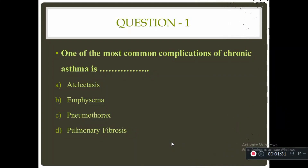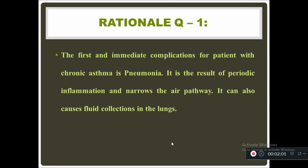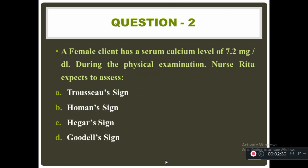Question one: one of the most common complications of chronic asthma is — option A: atelectasis, B: emphysema, C: pneumothorax, D: pulmonary fibrosis. The answer is pneumothorax. The reason is that the first and immediate complication for a patient with chronic asthma is pneumonia, resulting from periodic inflammation and narrowing of the airway pathway, which can also cause fluid collection in the lungs. This is why pneumonia ranks as the number one complication of chronic asthma.